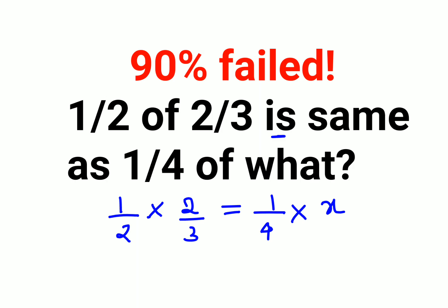So now what you can do over here is you will cancel these. And in order to get the value of x, you will multiply both sides by 4. So this 4 and this 4 also cancels. So basically you are getting 4 by 3 equals to x.